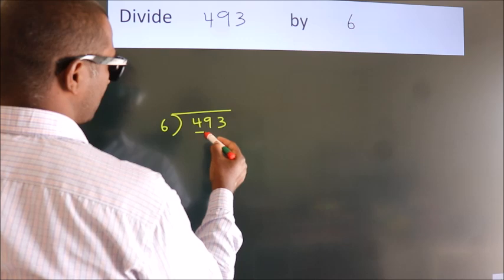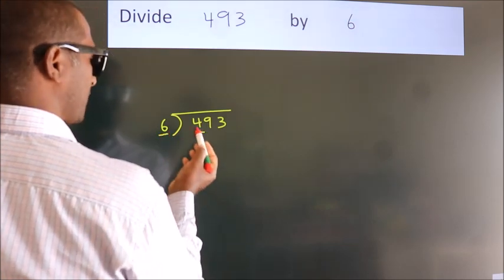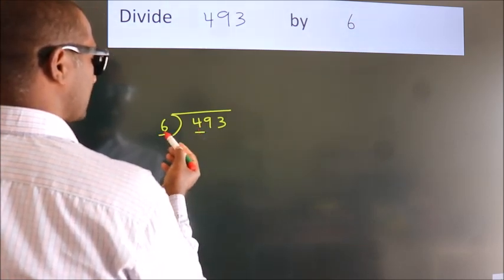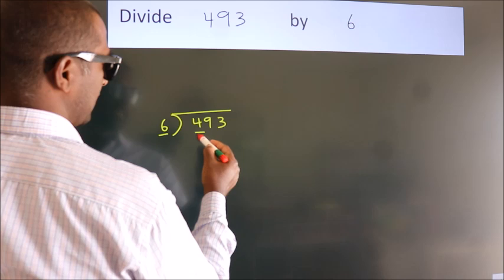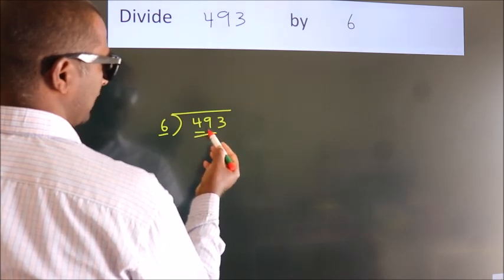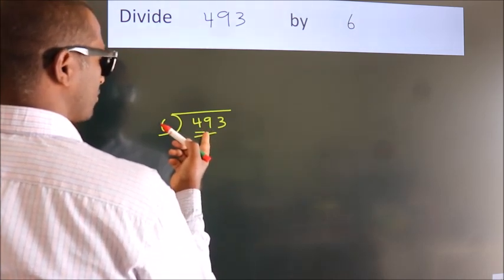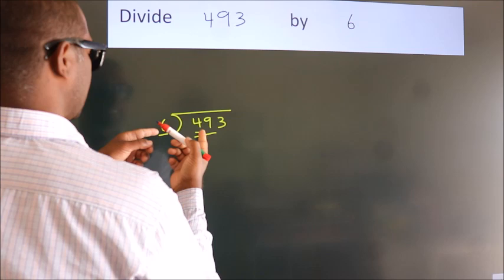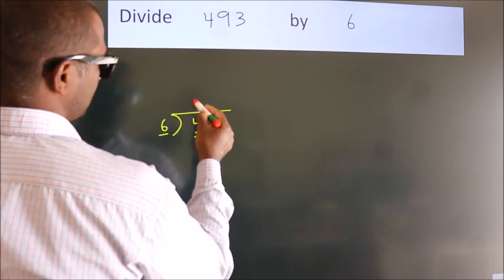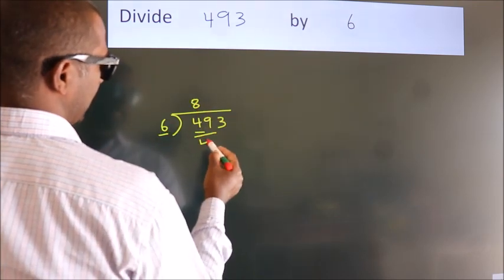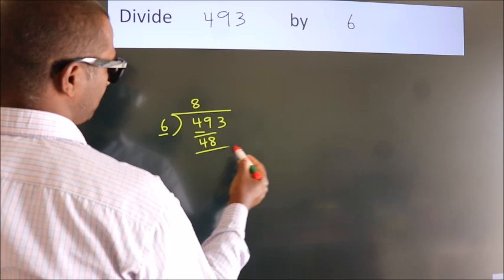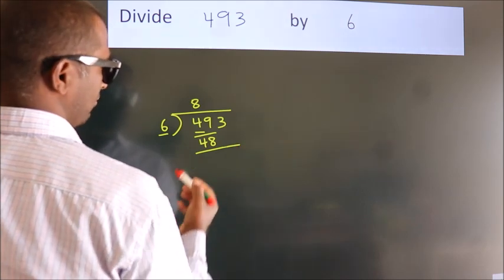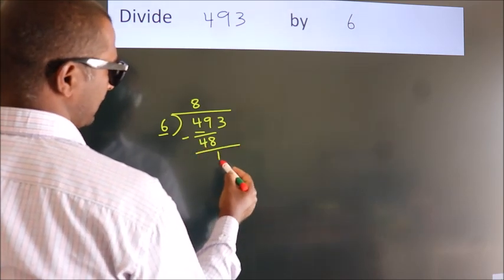Here we have 4. Here 6. 4 is smaller than 6, so we should take 2 numbers. 49. A number close to 49 in the 6 table is 6 times 8, 48. Now we should subtract. We get 1.